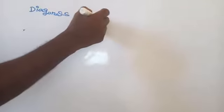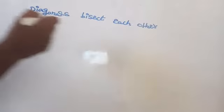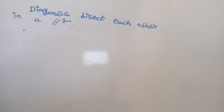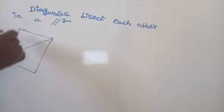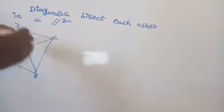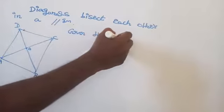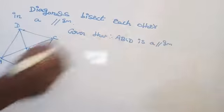Diagonals bisect each other in a parallelogram. So it is a parallelogram. The diagonals AC and BD intersect at a point O. Given that ABCD is a parallelogram, therefore AB is parallel to DC and AD is parallel to BC.